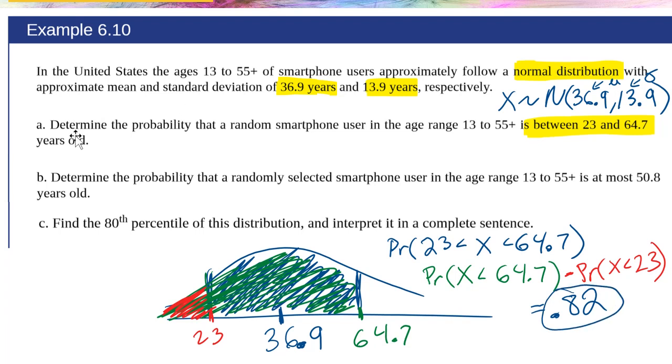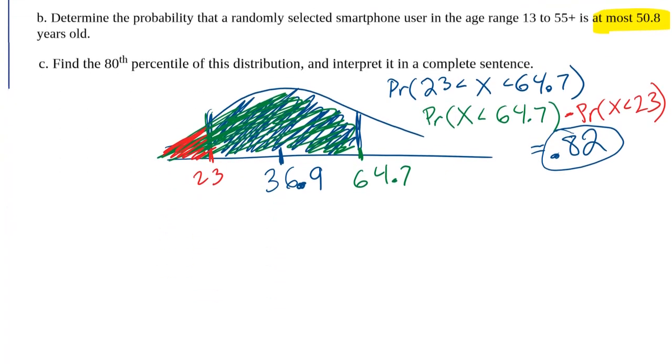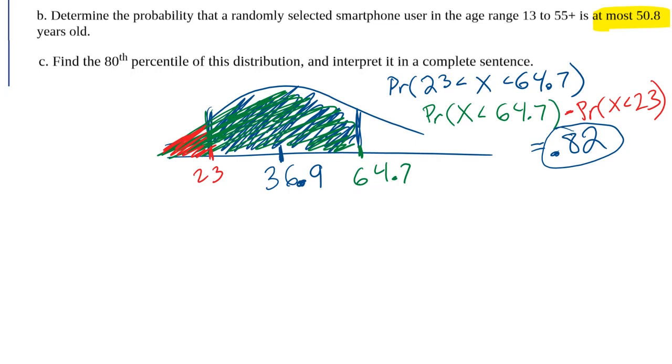Now let's move on to part B. Determine the probability that a randomly selected smartphone user in the age range 13 to 55 is at most 50.8 years old. So let me go ahead and scroll down so we can have more room to figure out the answer to this question.